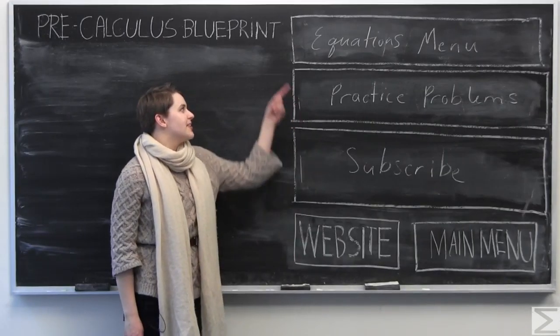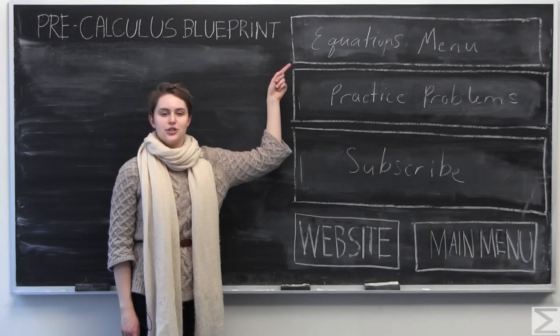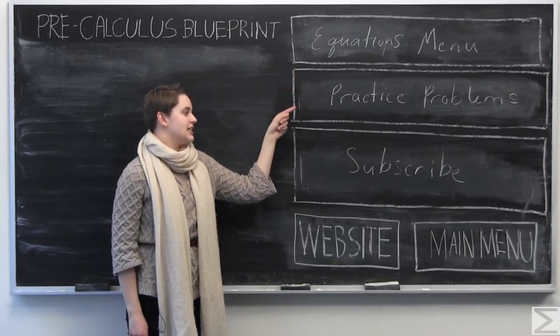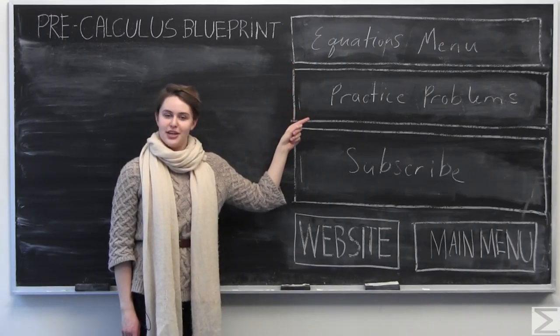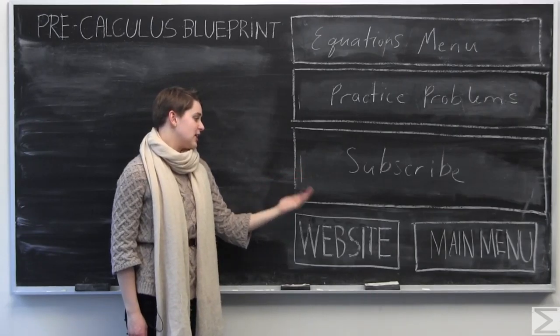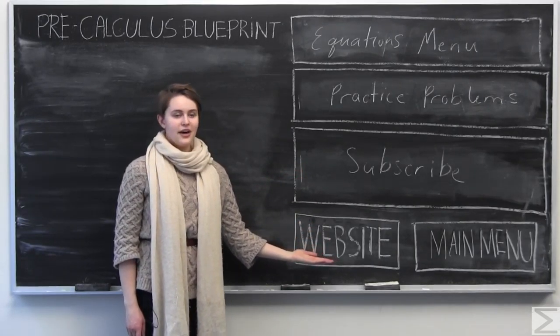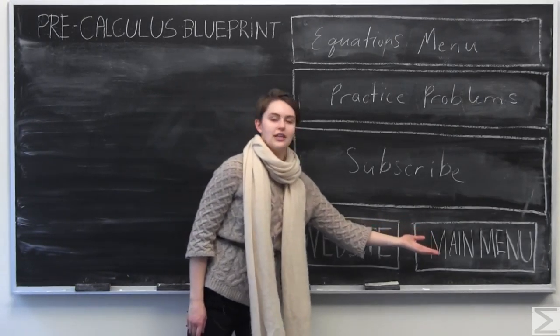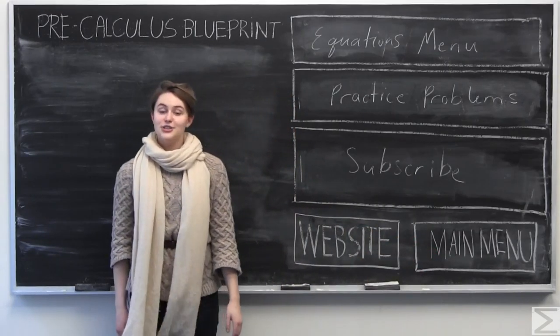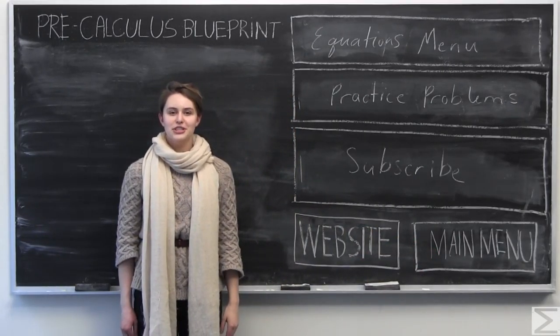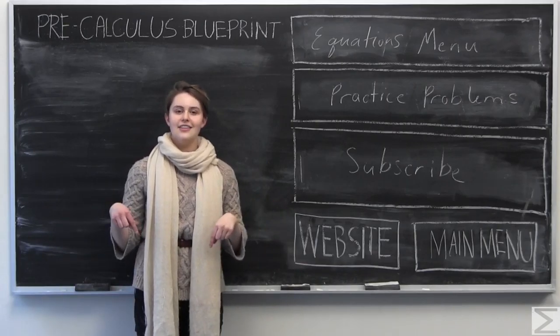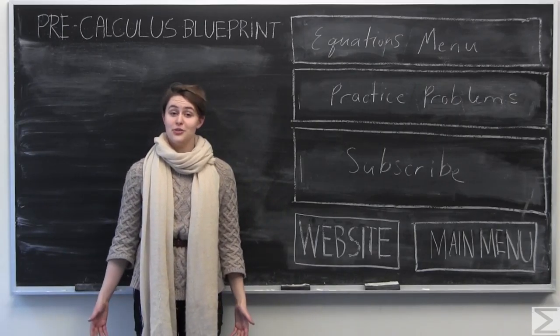To return to the equations menu, click here. To see more additional practice problems worked out, click here. To subscribe to our YouTube channel, click here. To visit our website, you can click here. And finally, to return to the main menu, you can click this link here. And as a reminder, if you haven't already done so, you can purchase the precalculus blueprint by clicking on the link in the description of this video. Remember, it's only $1.95.